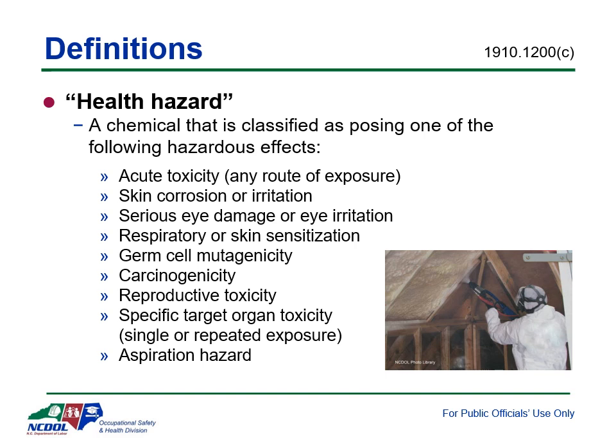Health hazards are chemicals that can cause harm to the health of workers. Some examples are respiratory or skin sensitizers — chemicals that cause the immune system to produce an allergic response. A respiratory sensitizer induces a hypersensitivity of the airways following inhalation, while a skin sensitizer can produce an allergic reaction following skin contact. Germ cell mutagens can cause mutations in germ cells, potentially leading to loss of fertility, embryonic death, or harmful mutations passed on to future generations. Specific target organ toxics, or STOTs, can cause adverse toxic effects on a specific organ or system such as the liver or immune system. Health hazards are not always evident, and prolonged exposure can cause health problems later in an employee's life.